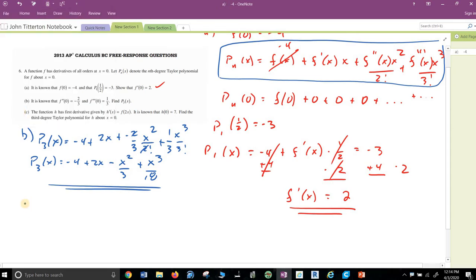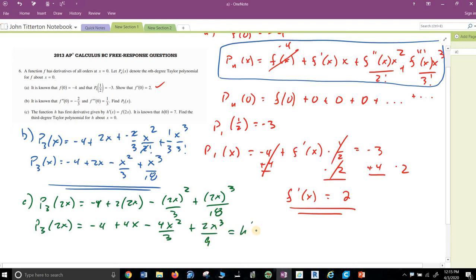Let's try a little green here. The function h has derivative given by h'(x) is whatever. F of two x is known that blah blah blah. Well, I've only got P_3 of two x to work with, so I'm going to work with that. P of four plus two times two x minus two x squared over three plus two x cubed over 18. P_3 of two x equals negative four plus four x minus four x squared over three plus, the two's will cancel, two x cubed over nine. Now, we know that equals h'(x). Therefore, h(x) equals the integral of P_3 of two x dx.